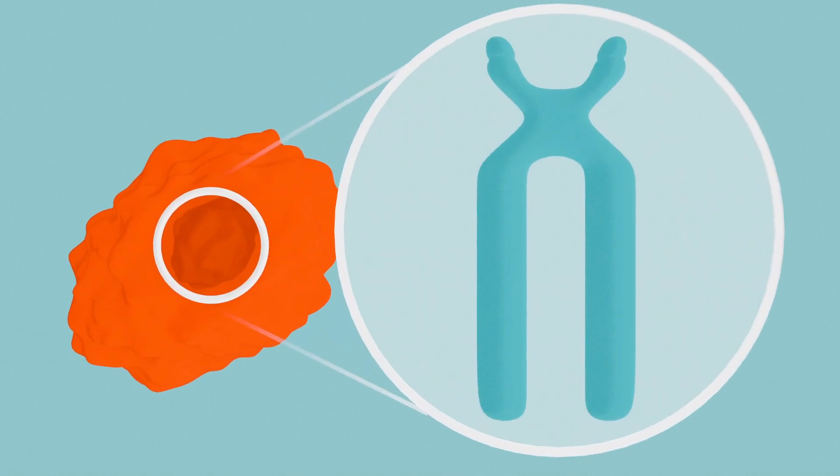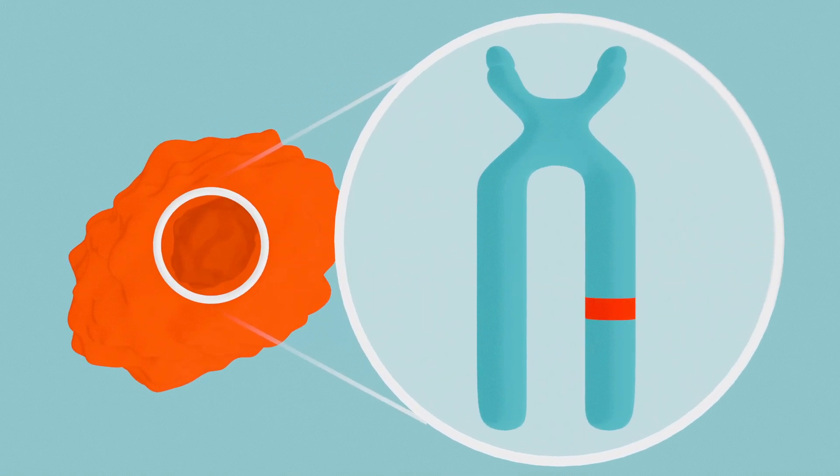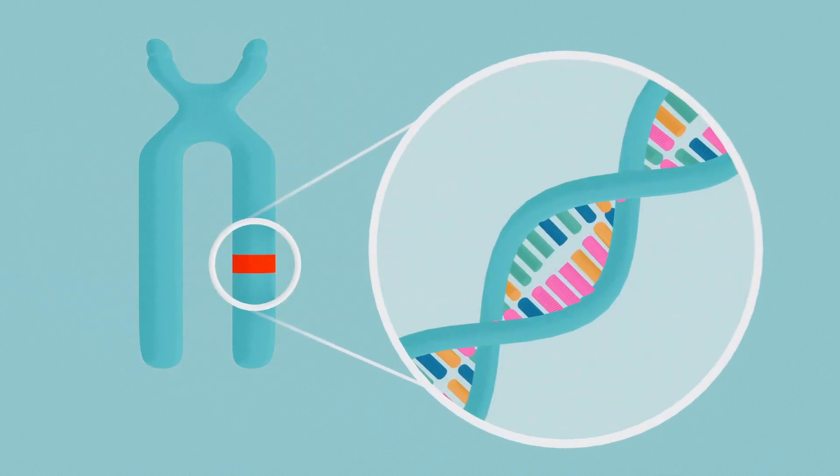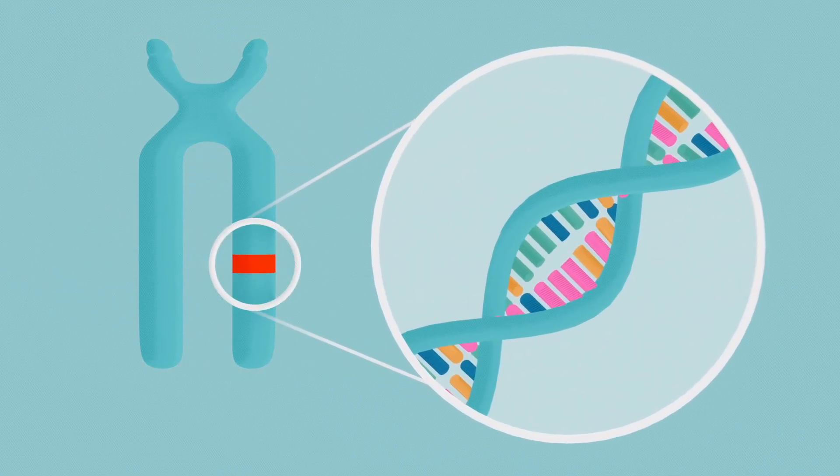Cancer happens if the genetic code gets disrupted, changing the way the cells function and repair themselves. Some people inherit a faulty copy of one or more genes, which makes them more likely to develop cancer. In other cases, cells can spontaneously develop a fault and cause cancer.